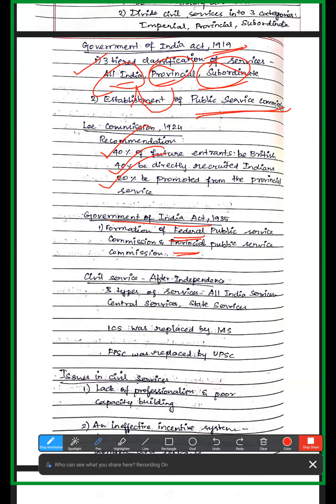After independence, there are three types of services: All India Service, Central Service, and State Service. The old category of all India, provincial, and subordinate was replaced by All India, Central, and State services. The Indian Civil Service was renamed the Indian Administrative Service, and the Federal Public Service Commission was replaced by the Union Public Service Commission.